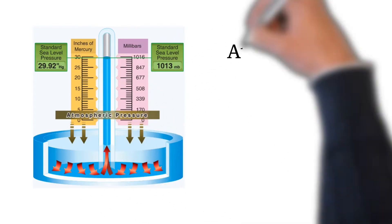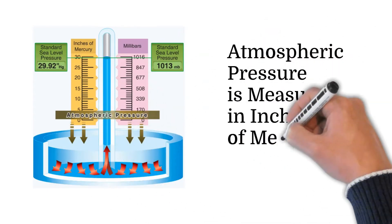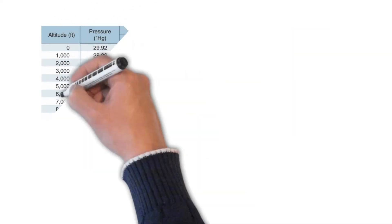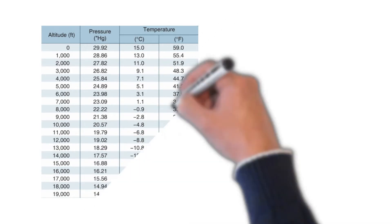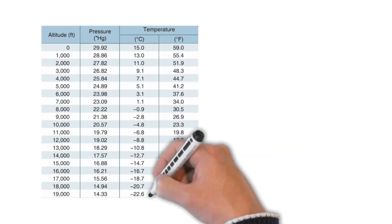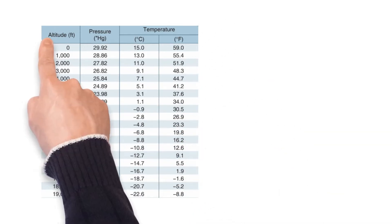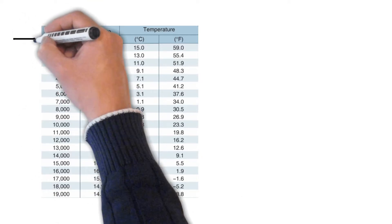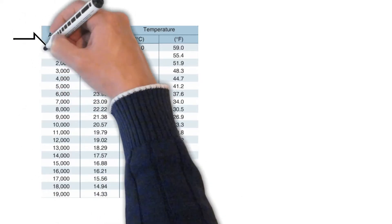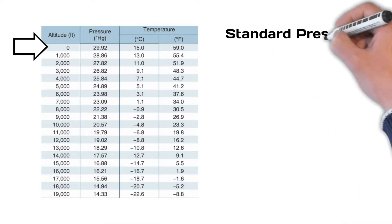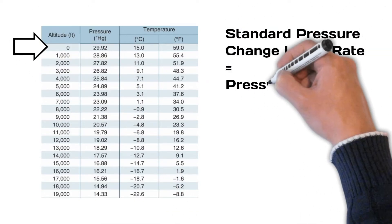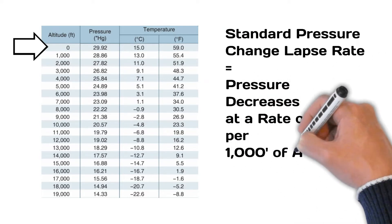Atmospheric pressure is measured in inches of mercury, abbreviated HG. The standard altimeter setting in atmospheric pressure at sea level is 29.92. As you can see from the chart on the left, air pressure decreases as altitude increases. The standard air pressure lapse rate is a one inch of mercury decrease for every 1,000 foot gain in altitude up to 10,000 feet.